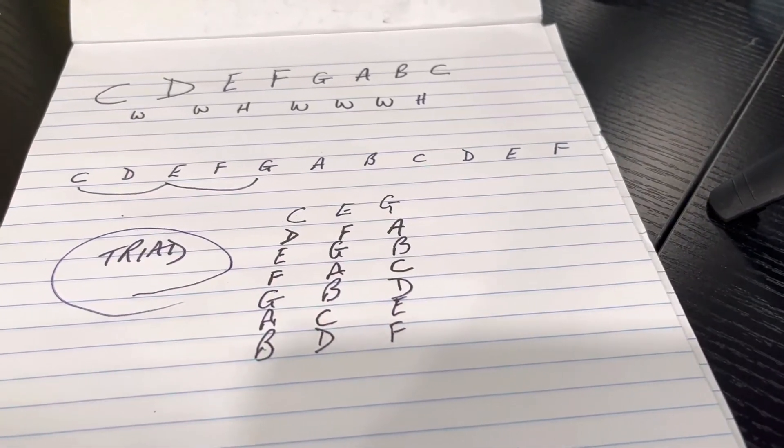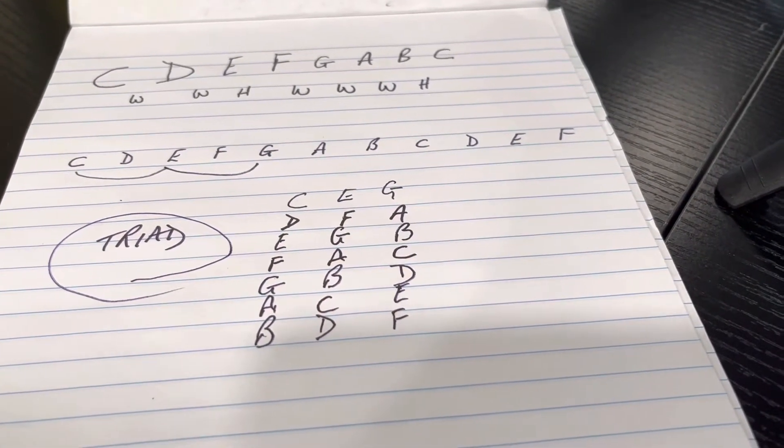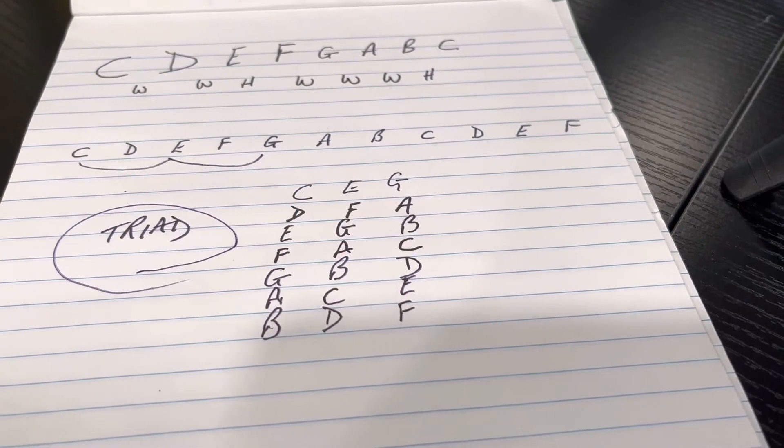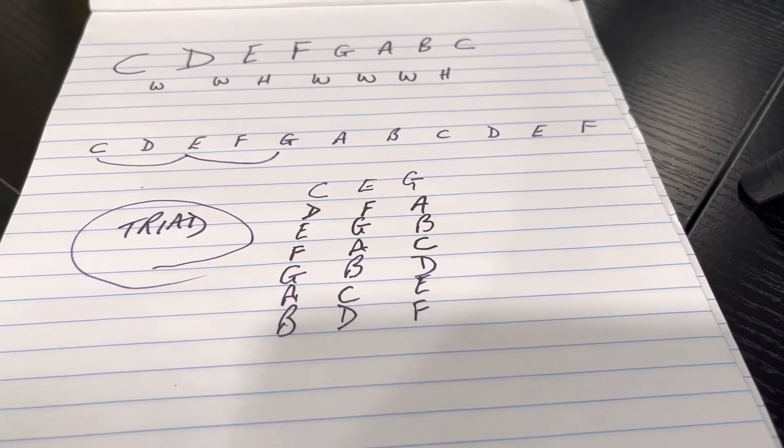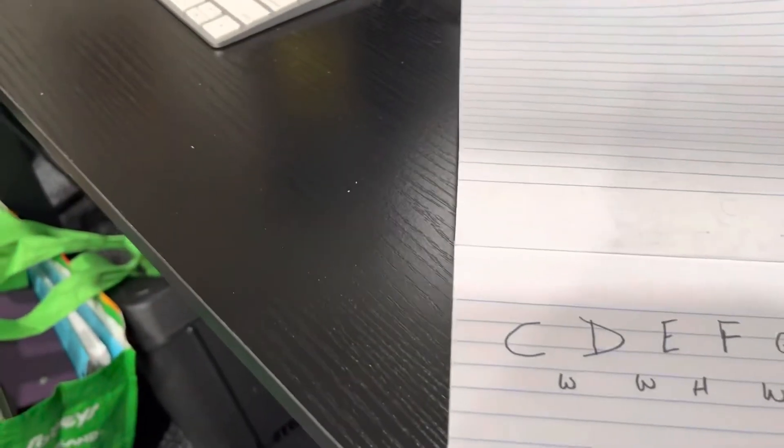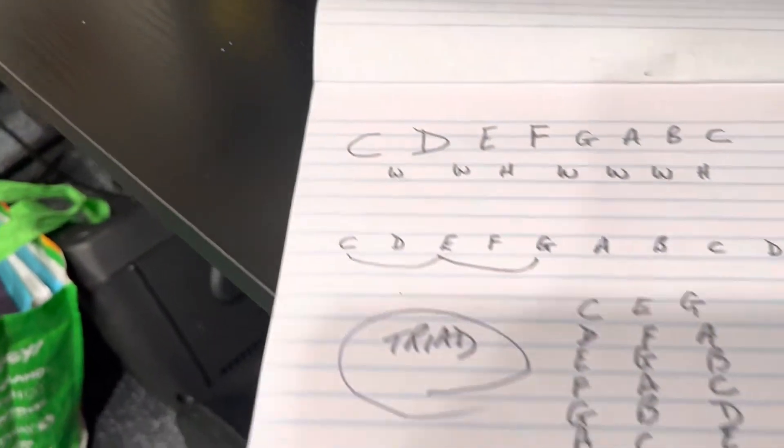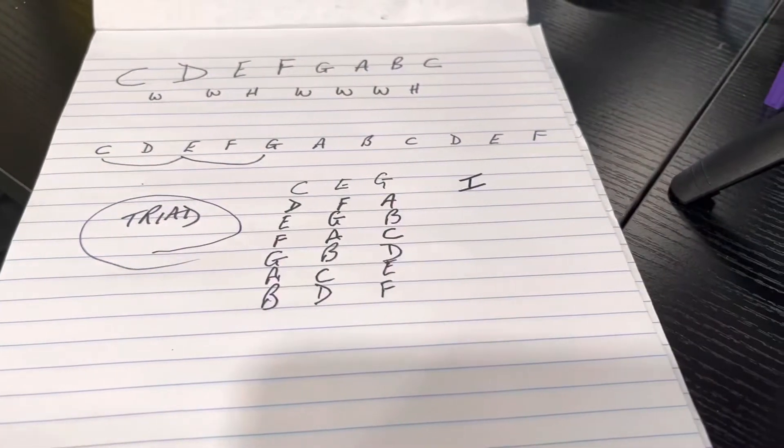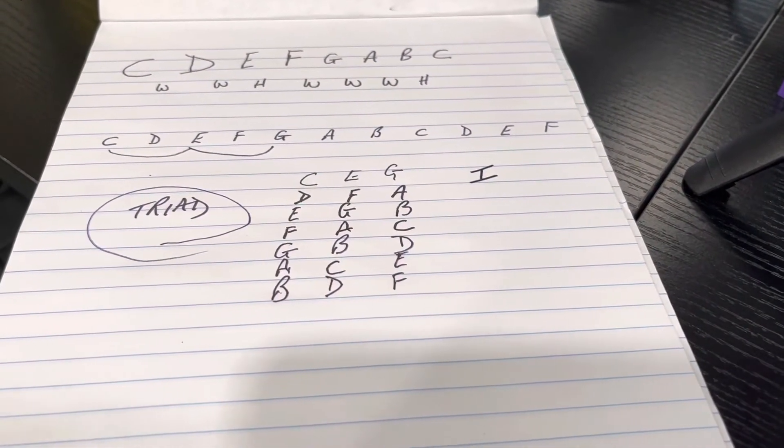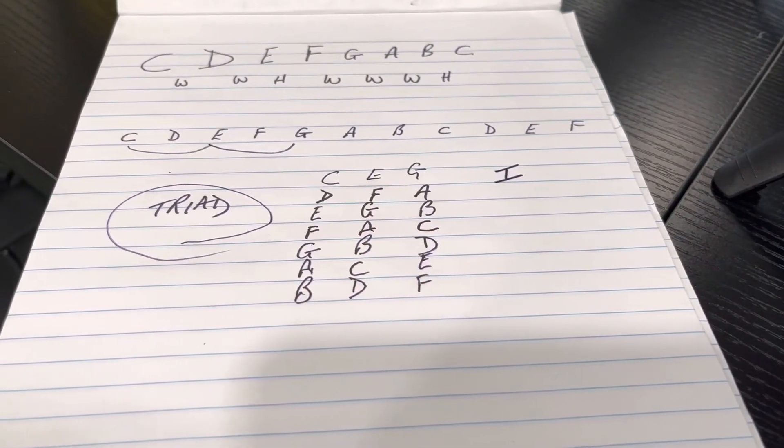The first chord in the key of C, the chord of C, is a major chord and it gets a Roman numeral I. The capital Roman numeral I means it's a major chord.